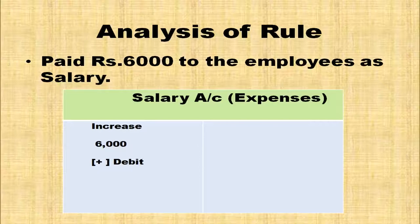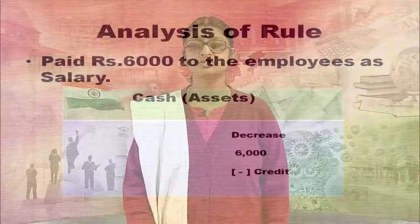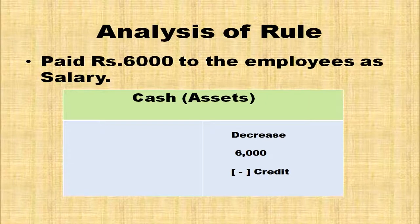Another transaction: Paid Rs. 6,000 to employees as salary. When anything is paid, cash is going from the business. Salary being an expense is debited; cash being an asset is credited. Rule for expense account: when there is an increase in expense, it is debited. So, salary account is debited. Cash being an asset is decreased, so it is credited. Two affected accounts: salary (debit) and cash (credit).